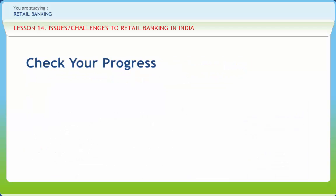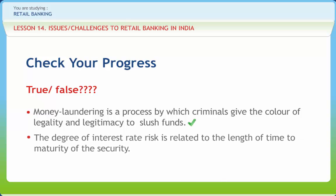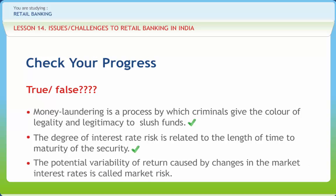Let us check if we have understood the various concepts discussed in this lesson. Money laundering is a process by which criminals give the color of legality and legitimacy to slush funds — Right or Wrong? Right. The degree of interest rate risk is related to the length of time to maturity of the security — Right or Wrong? Right. The potential variability of return caused by changes in the market interest rates is called market risk — Right or Wrong? Wrong.